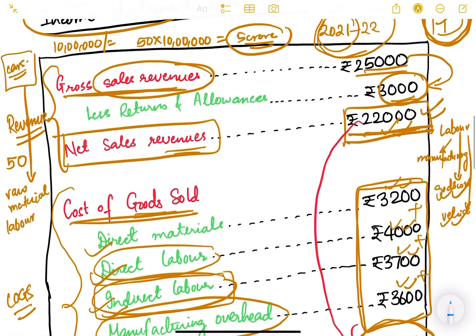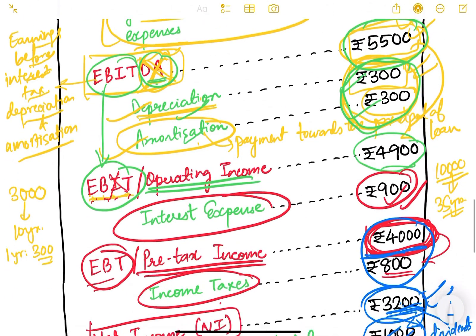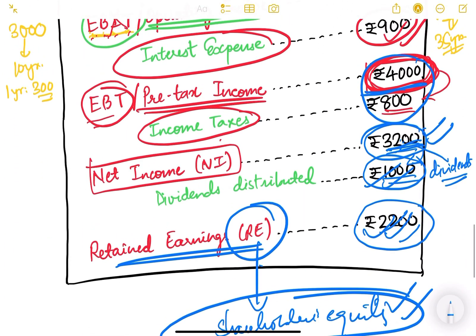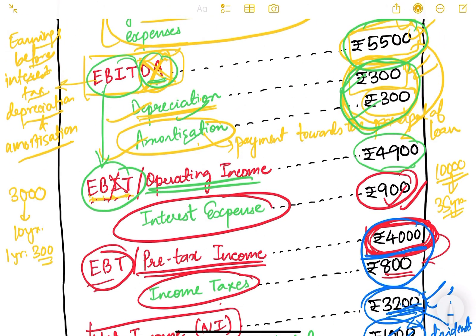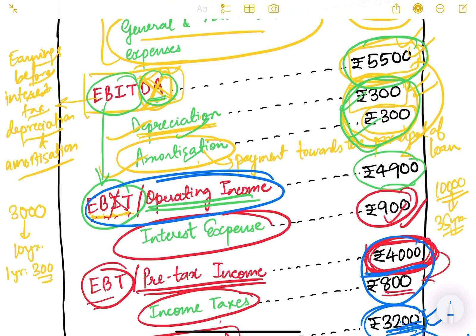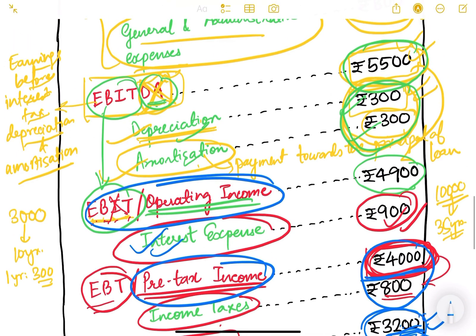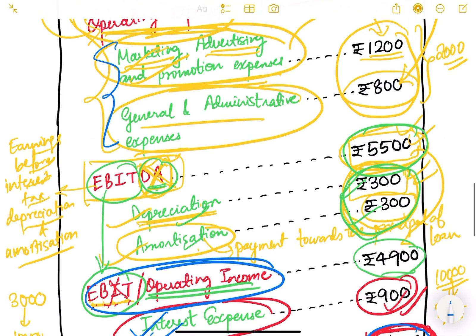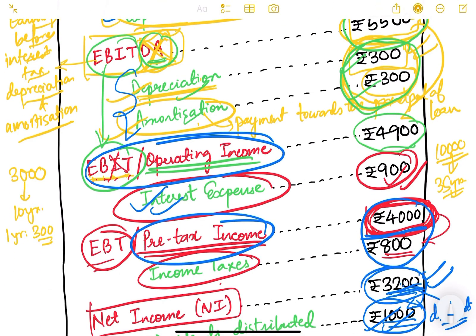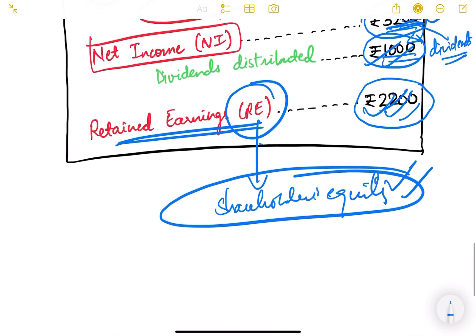This is the complete income statement. The most important concept for the exam is EBIT - operating income. From total sales revenue, you subtract cost of goods sold, then operating expenses, then depreciation and amortization to get operating income. From operating income you subtract interest to get pre-tax income, then subtract tax to get net income. We will continue corporate finance in the next lecture.